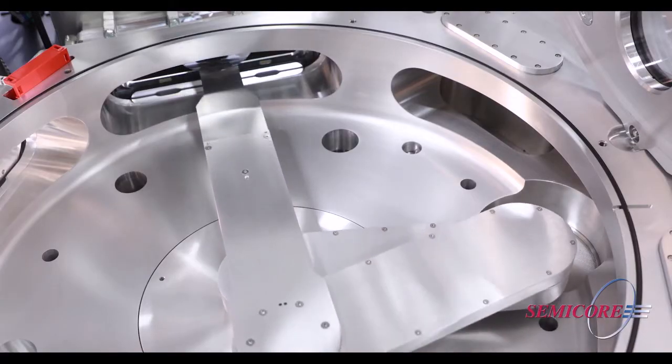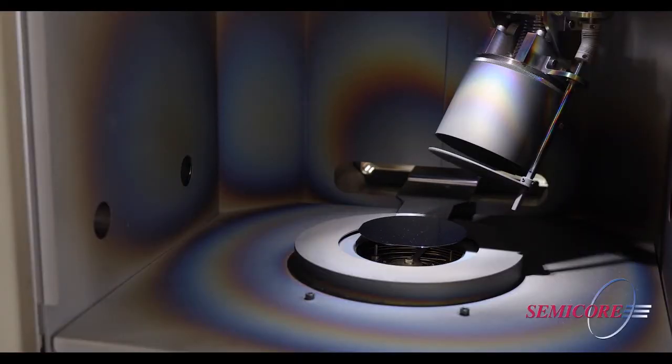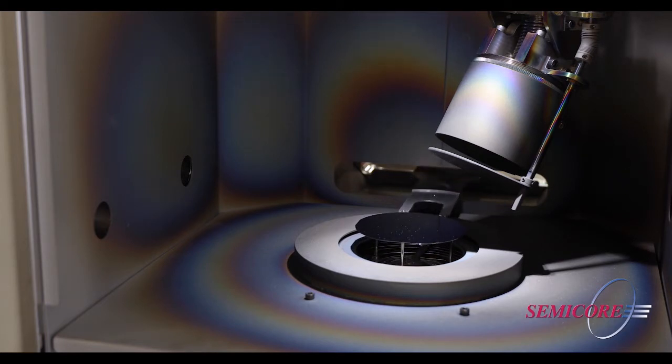The robot places a wafer into a deposition module where it is lifted from the robot end effector and placed on the substrate table. The robot then retracts from the module to allow processing to begin.